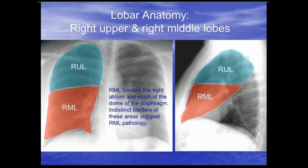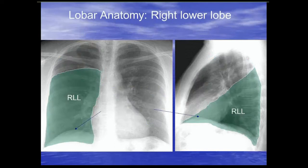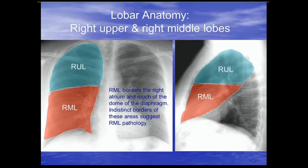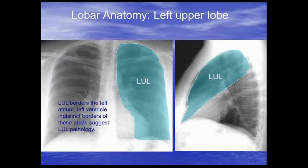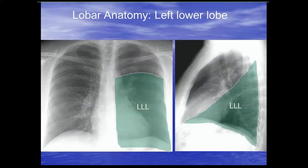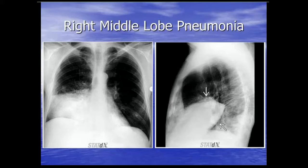Here's a great anatomic slide. On the right, you can see the right upper lobe, right middle lobe, and the minor or horizontal fissure. On the lateral, you can see the right upper lobe, right middle lobe, and horizontal fissure. A key point is noticing how far superiorly the right lower lobe extends. On the left, you can see the left upper lobe, the oblique or major fissure, and again how far superiorly the left lower lobe extends. As you go down the spine on a lateral, it shouldn't get denser — this helps pick up retrocardiac pathology.